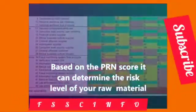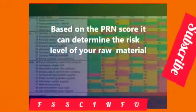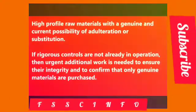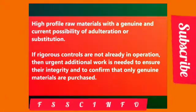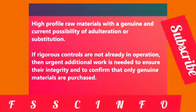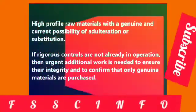You can scale the PRN score as per your preference. In this example, the scale is: very likely or certain, likely, fairly likely, unlikely, very unlikely or remote. Based on the PRN value, you can determine which category your raw material belongs to. Red color indicates high-profile raw materials with a genuine and current possibility of adulteration or substitution. If rigorous controls are not already in operation, urgent additional work is needed to ensure integrity and confirm that only genuine materials are purchased.